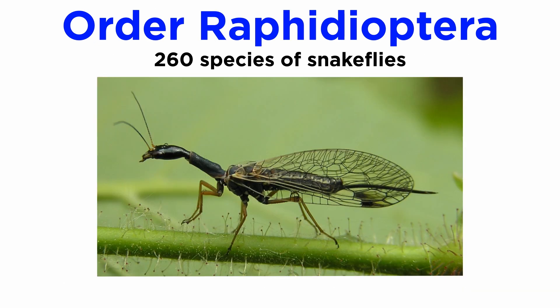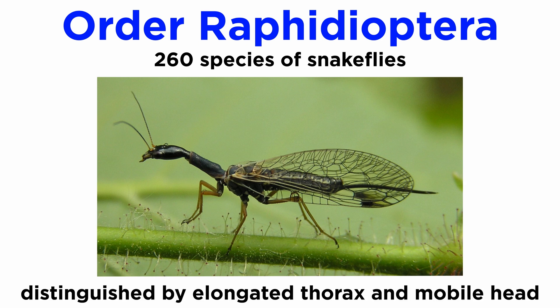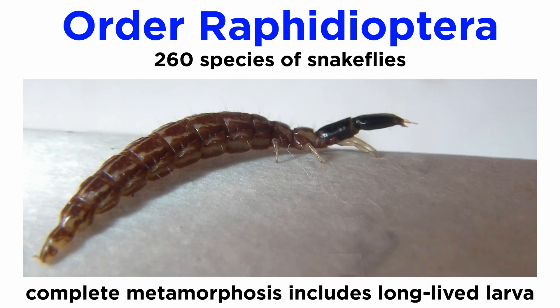There are only about 260 described species of snakeflies within order Raphidioptera. Members of this order are easily distinguished by their elongated thorax and mobile head. Snakeflies all go through complete metamorphosis, and in most species the larvae develop under the bark of trees and take years to develop before undergoing metamorphosis.